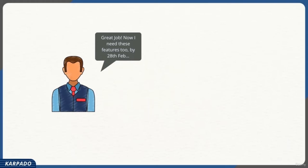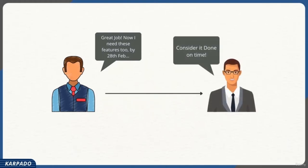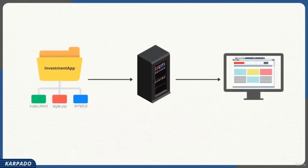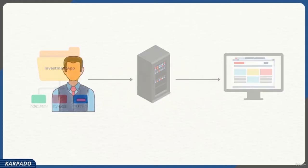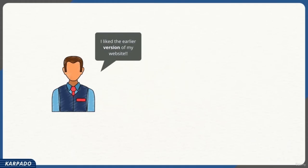Bob decided to add a couple more features to his website and gave a deadline of 28th February, which Sundar accepted. Sundar added all those features, hosted them, and showed the updated website to Bob. However, this time Bob was not completely satisfied — even though the new features introduced after 24th February were working fine, the features that had worked earlier seemed to have broken or were not working as expected.